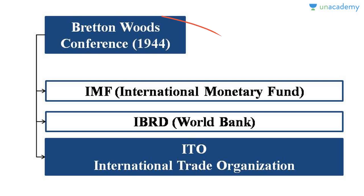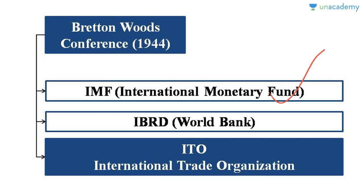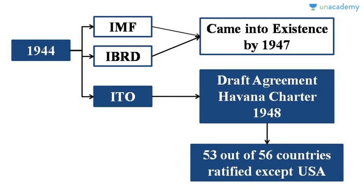These would-be winners of World War II met at a place called Bretton Woods in New Hampshire, USA, and organized the Bretton Woods Conference in 1944. They came up with a proposal for three types of international institutions to regulate the global economy: IMF (International Monetary Fund), IBRD (which would later become the World Bank), and ITO (International Trade Organization).